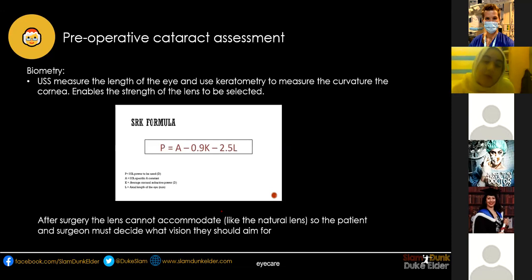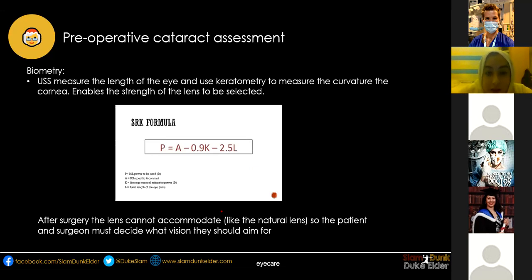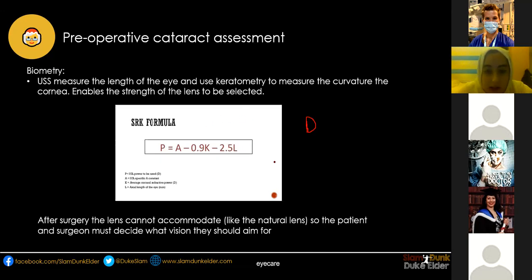When a patient comes for a preoperative cataract assessment, one of the most important components is biometry. This process allows the surgeon to pick the correct power of the lens to insert. It involves an ultrasound measurement of the axial length of the eye and measuring the curvature of the cornea using keratometry. There's a special formula used: P equals power of the lens in diopters (capital D); A is a constant that differs between lens materials; K is the corneal refractive power; and L is the axial length of the eye.